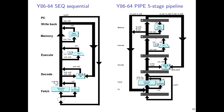Here is a picture contrasting the Y86-64 sequential processor on the left with the closely related pipelined version on the right. The same basic pieces are all there: instruction memory, program counter, register files, arithmetic logic units, control flags, and a spot for the memory system. What differs are the dark gray blocks appearing between the different stages in the pipeline. This is a five-stage pipeline and there are five of those gray blocks.